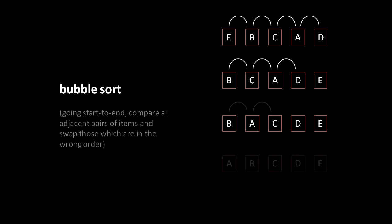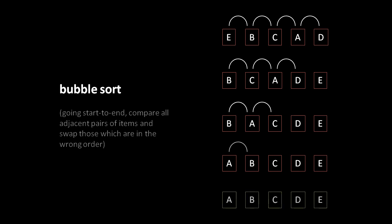Still not sorted, but there's another pass, again with one less comparison than the previous pass. We compare B against A — out of order, swap. Then B against C — in order, no swap. The list is now properly sorted. However, depending on the data, it's still possible that the first and second items could be out of order, so we do one more pass comparing one less item. The algorithm doesn't always know when it might finish early; that depends on the particular ordering of the list at the start.